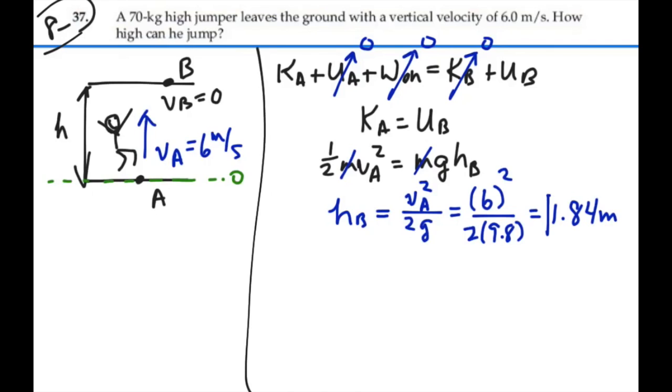So this high jumper can jump 1.84 meters, approximately 6 feet, which is pretty high. And that will be based on conservation of energy.